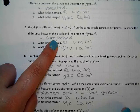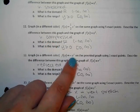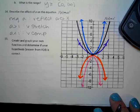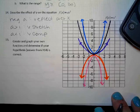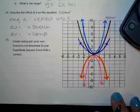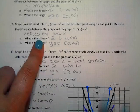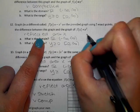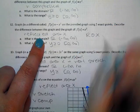What happens when you put a negative in front of the graph? It reflects it over the X-axis. We can also reflect over the Y-axis, so we're not just going to say 'reflected' — we're going to say 'reflect over X.' Some people shorthand this as 'Rex' if you want to write that.